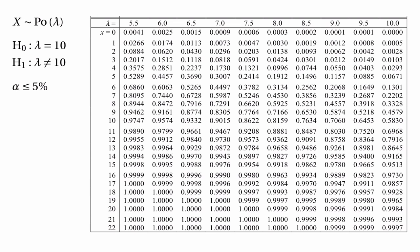Because we have a two-tailed test, we need to split the probability of 5% between the lower tail and the upper tail — so we want 2.5% for small values and 2.5% for large values. We scan down the right-hand column until we reach about 2.5%, getting to 0.0103, and can't go any further without going over 0.025. That shows the left-hand part of the critical region is the numbers 0, 1, 2 and 3. Then we scan up until we reach 0.9857, which is as far as we can go before exceeding 0.975, showing the right-hand part of the critical region is 18, 19, 20 and so on.